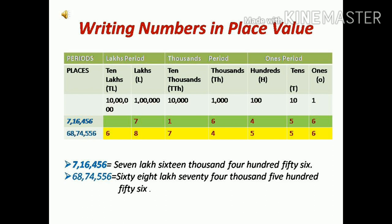While reading a number, always read from left to right. Read the number of each period and then say the name of the period after each number. For example, 68,74,556 — that will be read as sixty-eight lakh seventy-four thousand five hundred fifty-six.